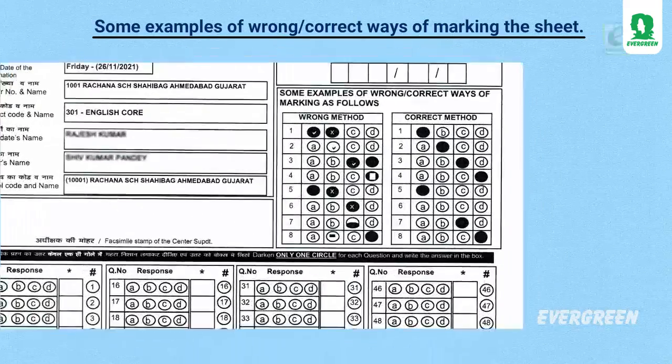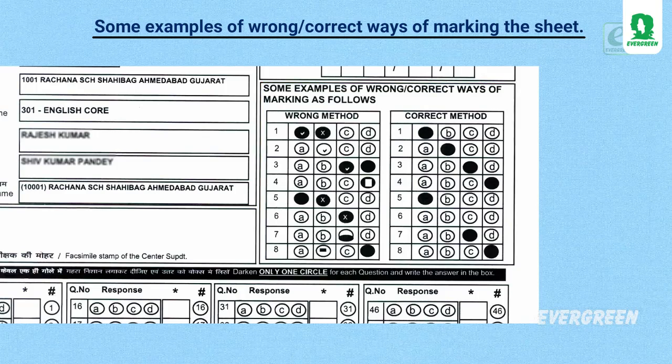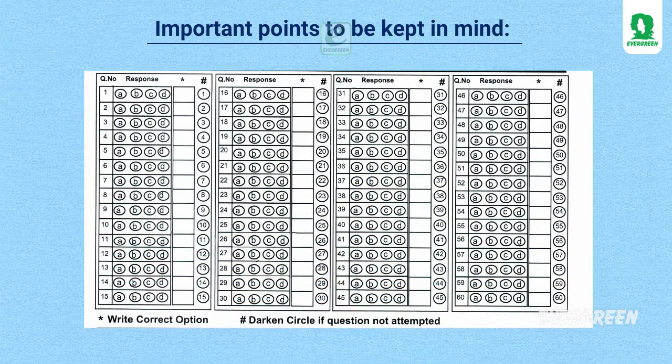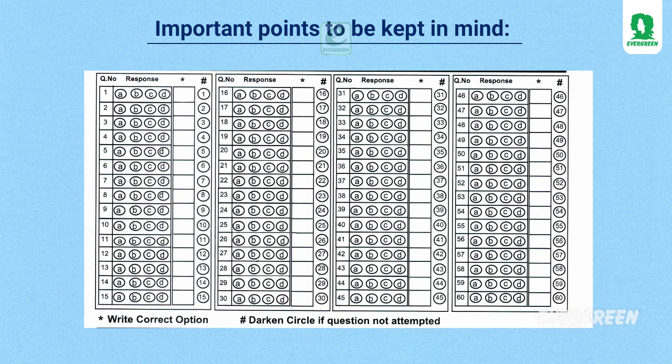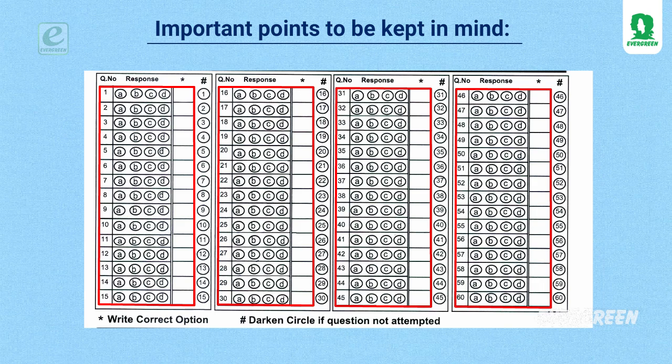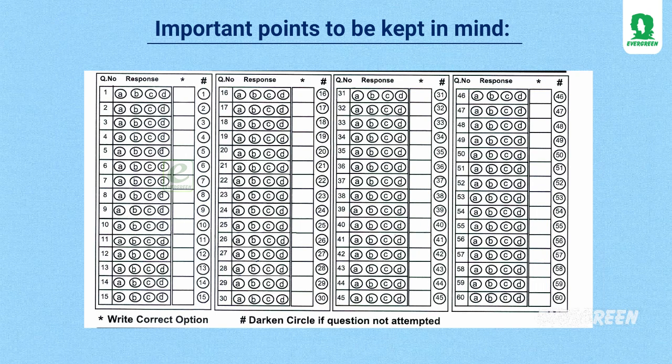Look at some examples of correct ways of marking the sheet. Some important points to be kept in mind while attempting answers on the OMR sheet. There is a space for answering 60 questions in the OMR. Candidates will use maximum circles as per total questions given in the question paper in serial order.